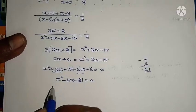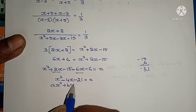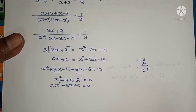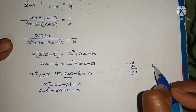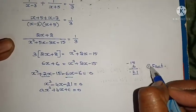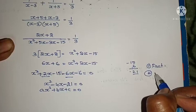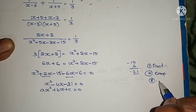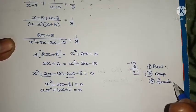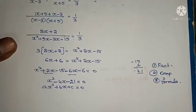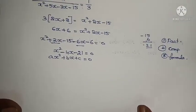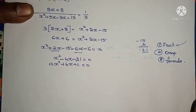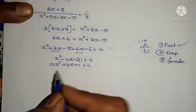It is in the form of AX squared plus BX plus C equals 0, so it is a quadratic equation. We have to find the roots. We have three methods: factorization method, method of completing squares, and by using the quadratic formula. You can use any of these three methods. I am using factorization method.